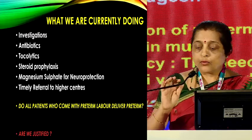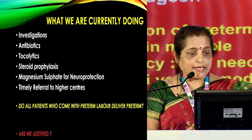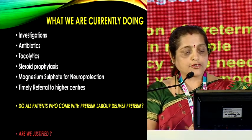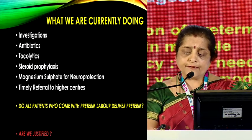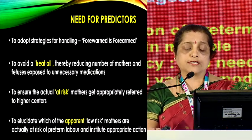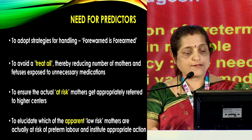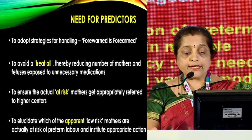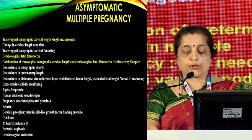So what are we currently doing when a patient comes with preterm labor? We order investigations, administer antibiotics, dole out tocolytics, give steroid prophylaxis, and make arrangements for neuroprotection. Now, do all patients who come with preterm labor deliver preterm? Are we justified in giving all patients all these drugs that may or may not be required? If we are able to predict, then forewarned is forearmed — we only need to treat high-risk mothers and identify low-risk mothers who are actually at risk.